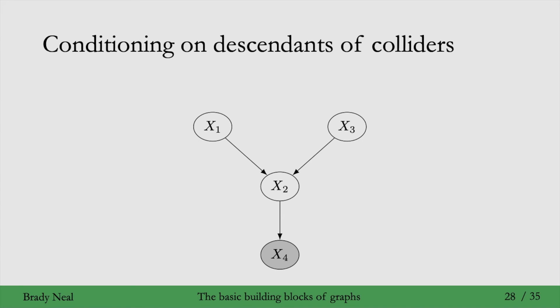Alright, so we just saw that when you condition on a collider, it induces association between its parents. What would happen if you were to condition on a descendant of a collider? So, here, x2 is a collider, and x4 is a descendant.